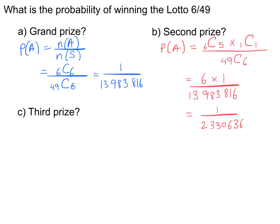For the third prize you have to get five out of the six drawn numbers, and also one out of the 42 numbers that weren't picked at all. Out of 49 numbers, they draw six main numbers plus one bonus — that's seven drawn numbers total — leaving 42 remaining.